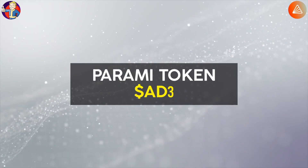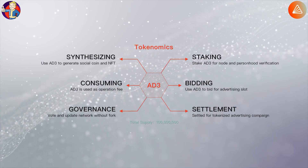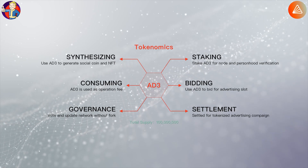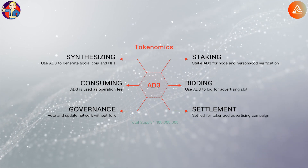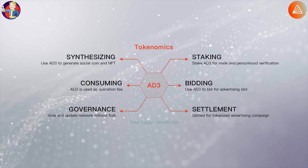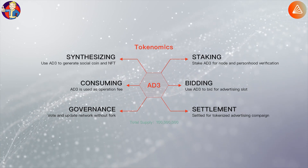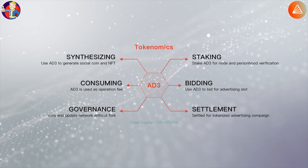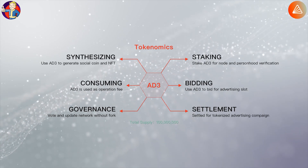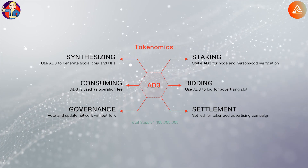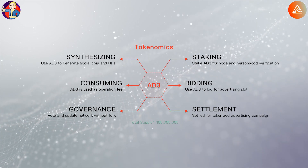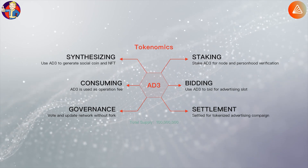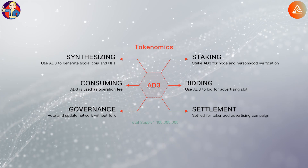The native token of the Parami protocol is AD3. It is a utility token that can be used in six scenarios: Settlement — the price of AD and the price of the token jointly determine the number of reward points a user will receive for a single advertising campaign. Bidding — use tokens to bid for advertising opportunities. Synthesizing — use AD3 to generate social coins and NFTs. Paying — AD3 will be used to pay the operation fee. Governance — vote and adjust chain parameters. Staking — stake tokens for mining and community development.